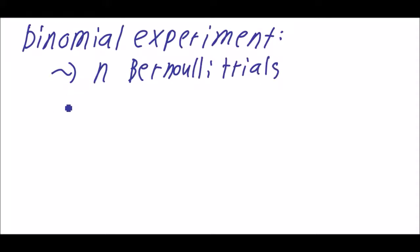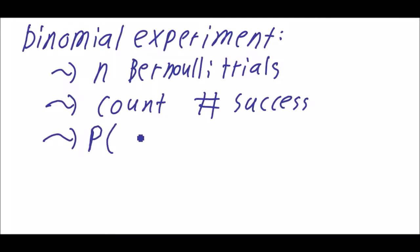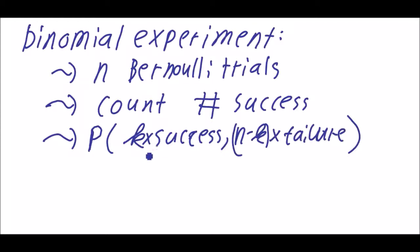And you count the number of successful trials. You can give the probability of say K successes, so k times success and n minus k times failure, which is the same of course.